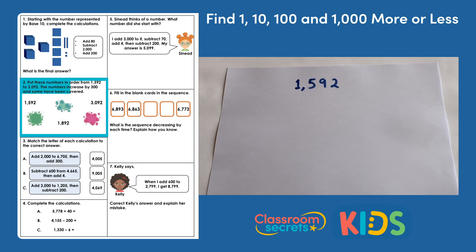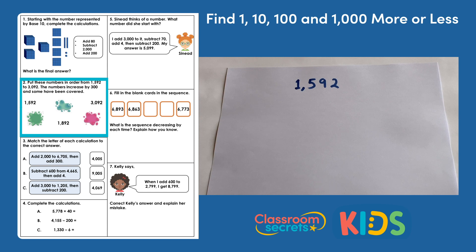Question 2. Put these numbers in order from one thousand five hundred and ninety-two to three thousand and ninety-two. The numbers increase by three hundred and some have been covered. We've got three numbers we can see, including the smallest — one thousand five hundred and ninety-two — and the greatest — three thousand and ninety-two — and three other numbers covered up, as well as one thousand eight hundred and ninety-two that we know will appear in the sequence.